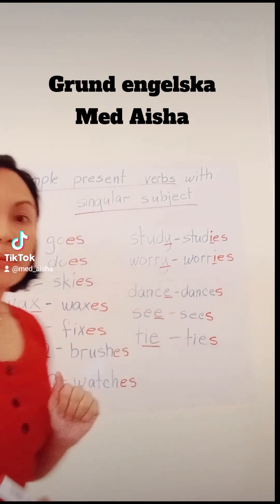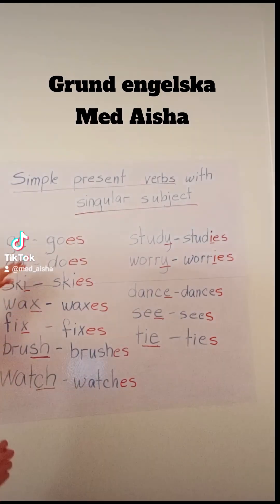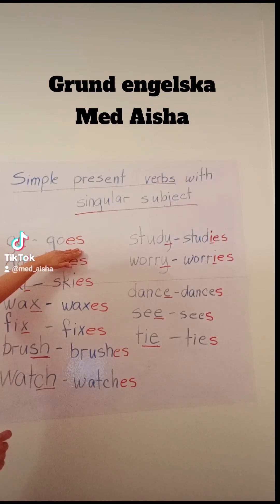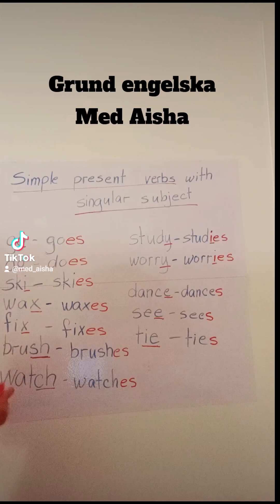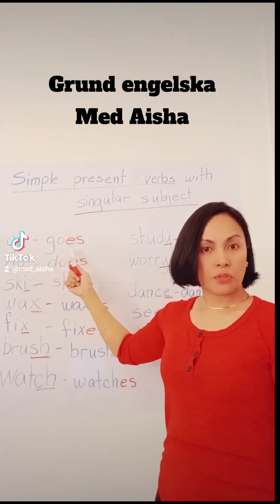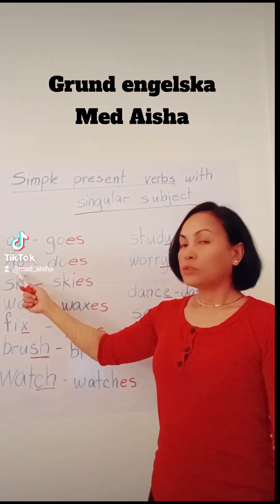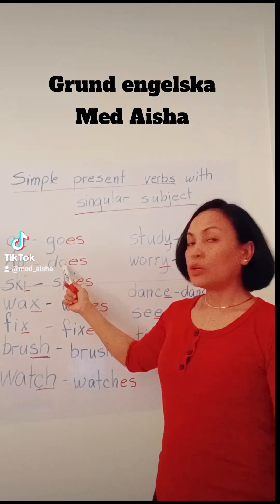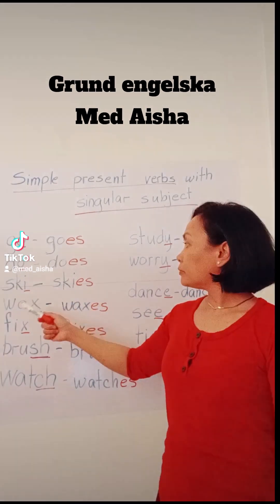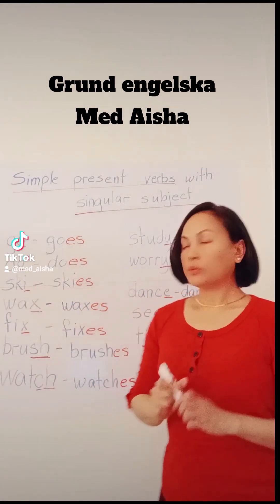Now, if your verb ends with O, as you can see here, just add ES. GO becomes GOES. DO becomes DOES.